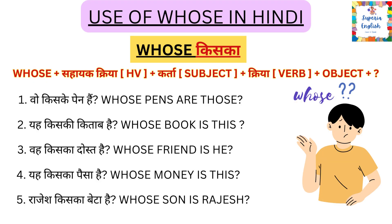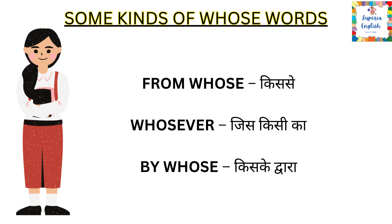Next word is 'whose.' 'Whose' means 'kiska' in Hindi. Examples: Vo kiske pen hain — Whose pen are those? Yahan kiski kitaab hai — Whose book is this? Vo kiska dost hai — Whose friend is he? Yeh kiske paise hain — Whose money is this? Rajesh kiska beta hai — Whose son is Rajesh? Some 'whose' words: from whose (kis se), whosoever (jis kisi se), by whose (kiske dwara).